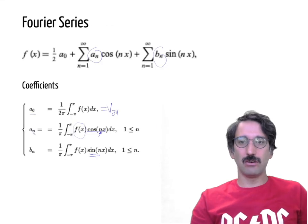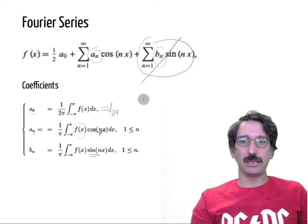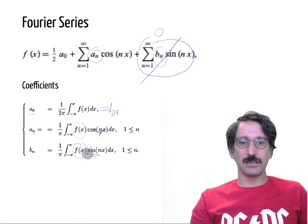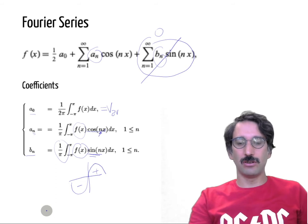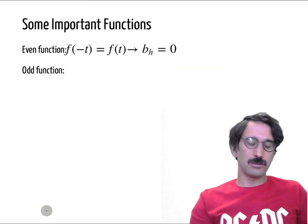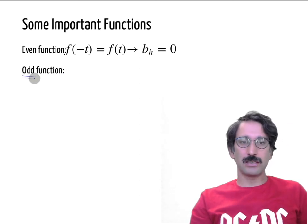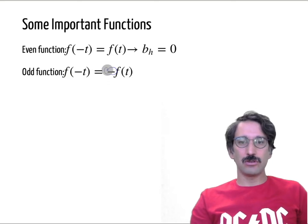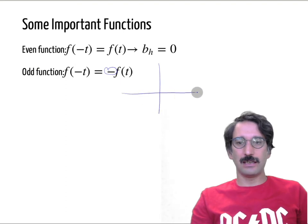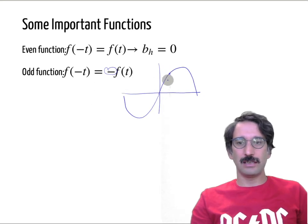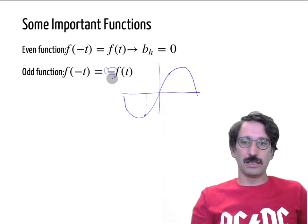For even functions, all bn components are equal to zero. You can verify this yourself: if your function is symmetrical and you multiply it by the sine function — which is positive on one side and negative on the other — they cancel each other, giving an integral of zero for all bn values. The other symmetry type is the odd function, where you have the inverse of the signal in quadrature regions.